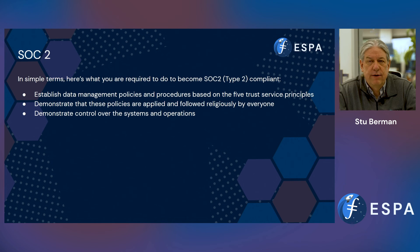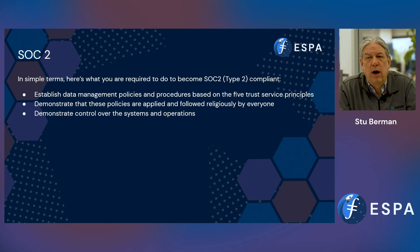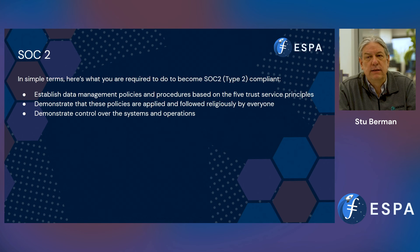This was all rather long-winded. In simple terms, here's what you are really required to do to become SOC 2 Type 2 compliant. First, establish data management policies and procedures based on the five trust service principles. Second, demonstrate that these policies are applied and followed by everyone. Third, demonstrate control over the systems and operations that are in scope.